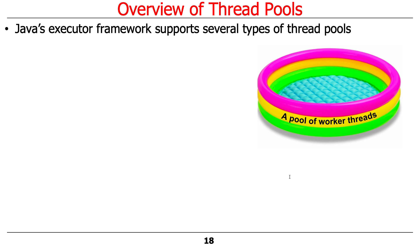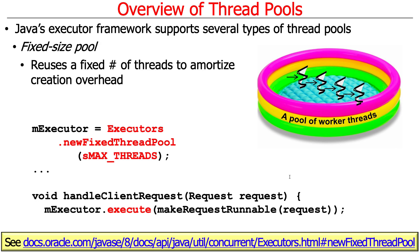The Java executor framework supports multiple types of thread pools; the three most common are what we'll cover. The simplest is the fixed-size thread pool, where you give it a fixed number of threads to pre-spawn when you create the pool, amortizing the creation overhead so they can be reused. Here's a simple example using the newFixedThreadPool factory method from the executors utility class. You make some number of threads — say S_MAX_THREADS could be four, six, or eight. When there's work to do, rather than spawning a new thread, you create a task using a factory method like makeRequestRunnable, which queues that task up to be executed in the executor.